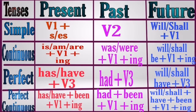Now let us see the rules for past tense. In simple present tense we used V1 form, so in past tense we use V2 form. In present continuous we used 'is/am/are'; the past equivalents are 'was/were.' So in past continuous, we use 'was/were' plus V1 plus '-ing.' Links for where to use 'was' and 'were' are in the description box.